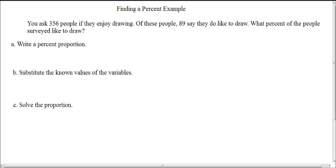Well, the first thing you want to do is write your percent proportion. And if we do so, we will have a over b is equal to p over 100.